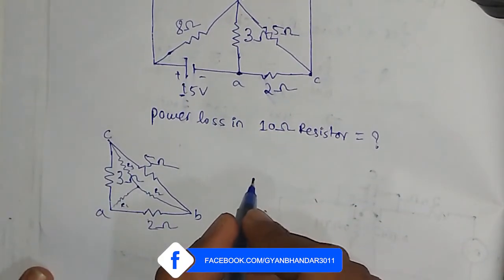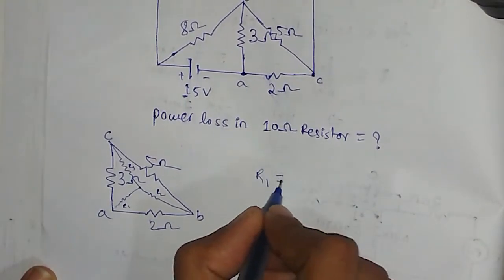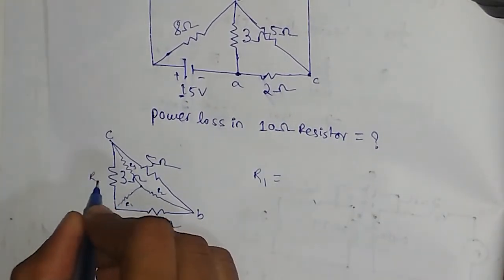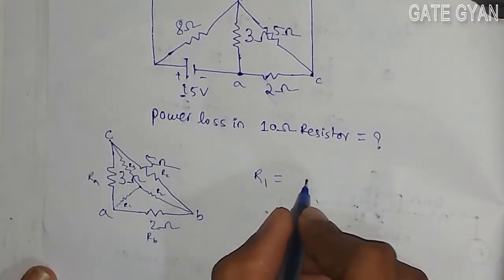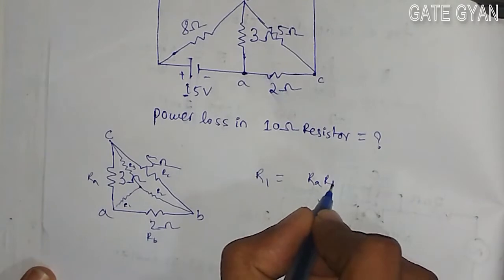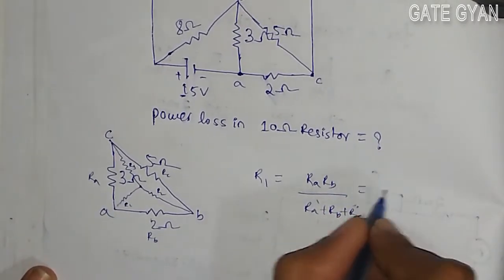So my start of a delta to star conversion, my r1 is going to be, if this is r_a, r_b, and r_c, so r1 is going to be r_a times r_b upon r_a plus r_b plus r_c. So it is going to be 3 into 2 upon 2 plus 3 plus 5.